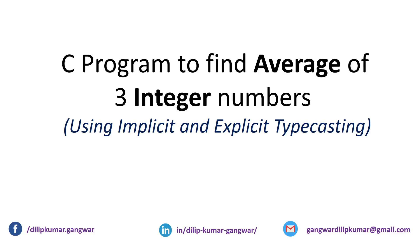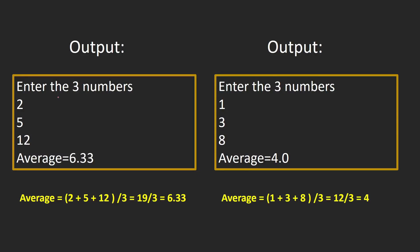So let's understand the problem statement. Our input and output will look like this. We will be asked to enter three numbers. We will be entering three integer numbers: 2, 5, 12. The average of 2, 5, 12 is 6.33.